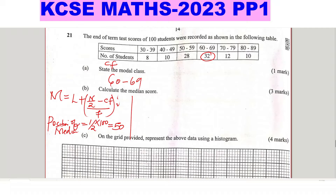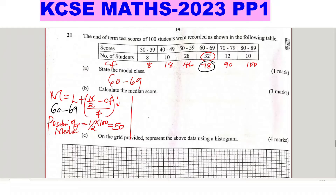To find where position 50 falls, we get the cumulative frequency from the table. So: 8, then 8 plus 10 gives 18, 18 plus 28 gives 46, 46 plus 32 gives 78, 78 plus 12 gives 90, then 90 plus 10 gives 100. Now identify where 50 falls — it falls in the group where cumulative frequency reaches 78. Therefore the median class is 60 to 69.